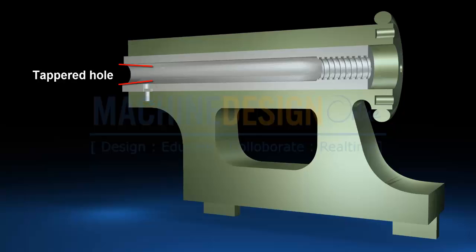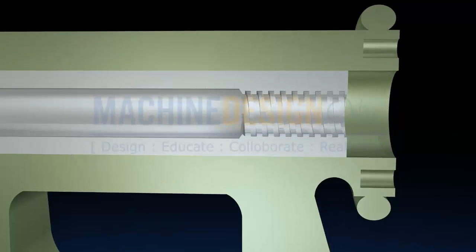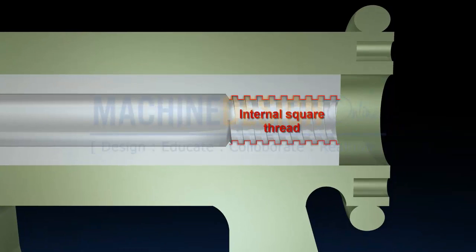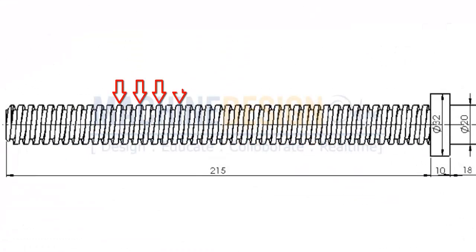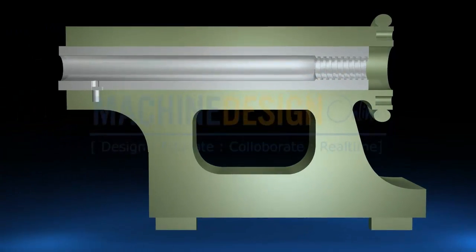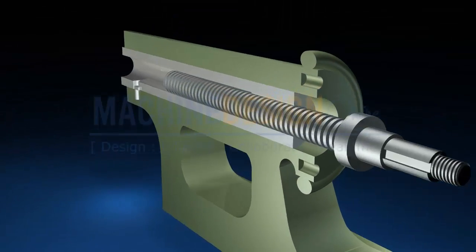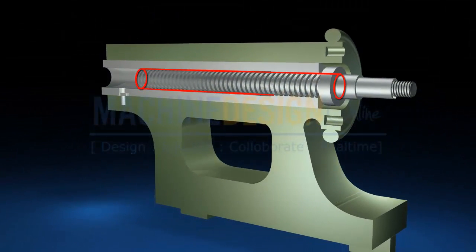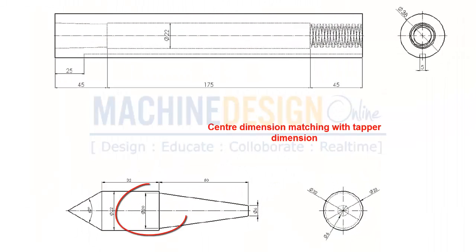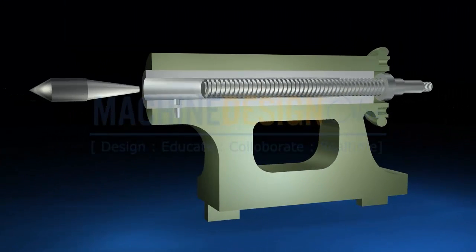Barrel is having taper hole and some internal square thread portion. Spindle is also having square thread. That means spindle can exactly fit into barrel. Also dimensions like 20mm diameter is matching. Center dimensions are matching with taper dimensions of barrel spindle. Let's place center inside the barrel.